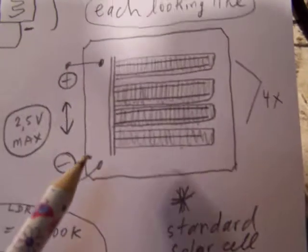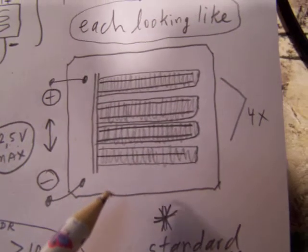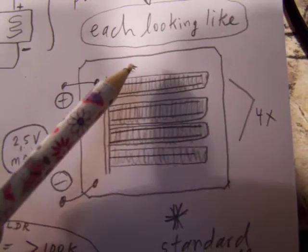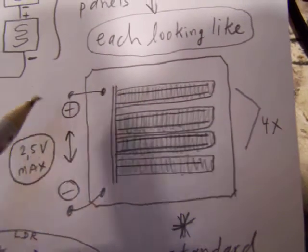This is a standard cell that comes with such a Chinese lantern, four of these strips in it, positive negative. It's also possible that you find such a cell.